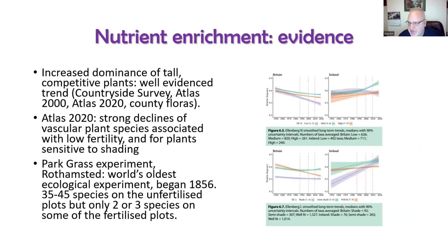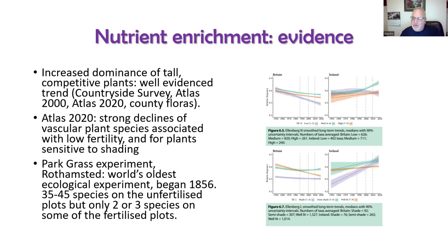Grassland plants have evolved to make the best use of quite scarce resources, but in the industrial societies of the Anthropocene we have much higher levels of nutrients than would naturally be the case. The result is that tall, big competitive plants take over to the detriment of smaller ones. The two atlases produced by the Botanical Society of Britain and Ireland — one in 2003 and another just published — contain a massive analysis of how our flora has changed and is changing.